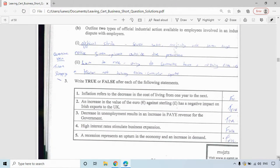Question three: you have to write true or false after each of the following statements. Inflation refers to the decrease in the cost of living from one year to the next—that's false, that would be deflation. An increase in the value of the euro against sterling has a negative impact on Irish exports to the UK—that would be true. A decrease in unemployment results in an increase in PAYE revenue for the government—that would be true as well because there's a decrease in unemployment, which means more people are now working and paying PAYE.